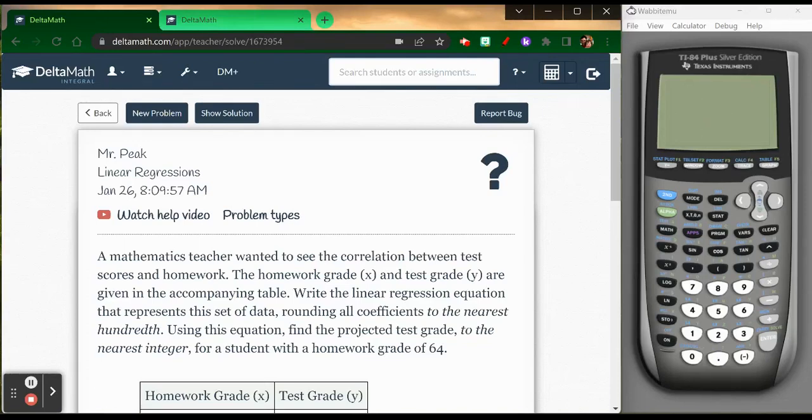This video is going to be about linear regressions and how to complete those using the graphing calculator. Linear regressions are lines that we fit to scatter plots. We want to see if there's a positive correlation or a negative correlation to this set of data.